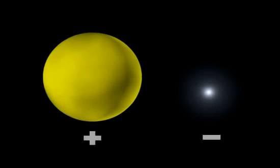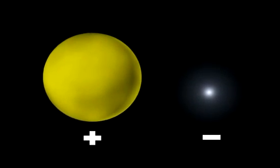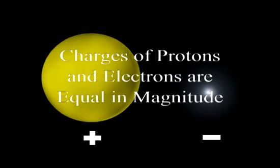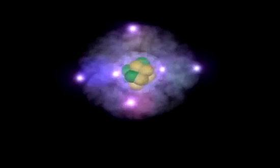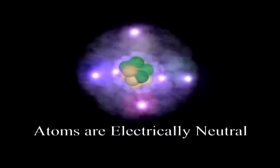Protons and neutrons each have a mass approximately 1,836 times greater than that of electrons. However, in spite of the huge difference in mass between protons and electrons, their electrical charges, though opposite, are equal in magnitude. As atoms have equal numbers of protons and electrons, they are electrically neutral.